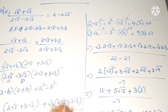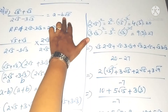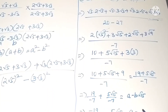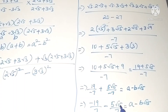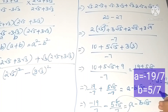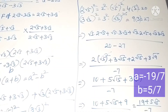This equals a − b√15 as given in the problem. Comparing: −19/7 − (5/7)√15 = a − b√15. Since both have √15, the value of a = −19/7 and the value of b = 5/7. Therefore a = −19/7 and b = 5/7.